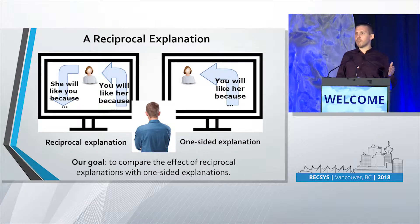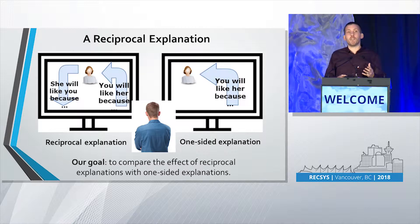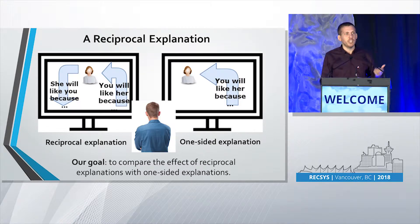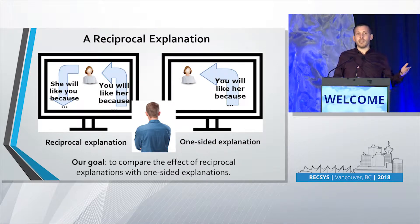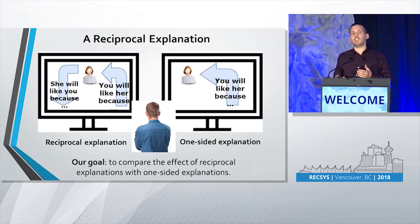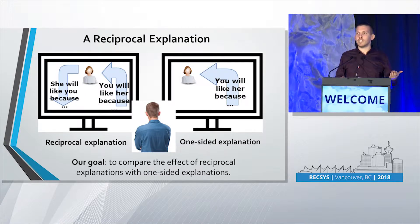So, in our work, we present a new form of explanation, which we call a reciprocal explanation. A reciprocal explanation provides reasoning for the interest of both sides. For example, you will like her because she's an artist, and she will like you because you like hiking. And we compare our reciprocal explanations to traditional explanations, which focus on the service user's interest, and we call them one-sided explanations. Our goal in this work is to compare their effect.